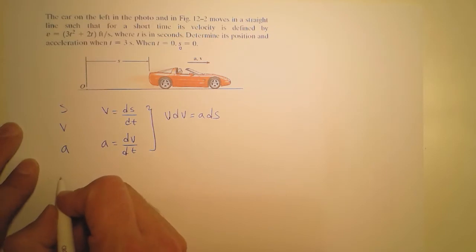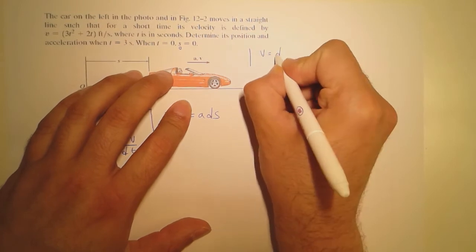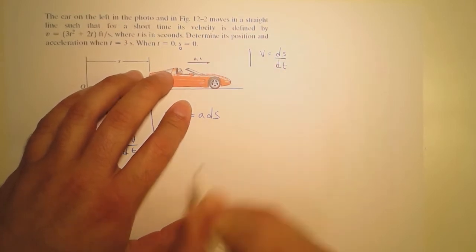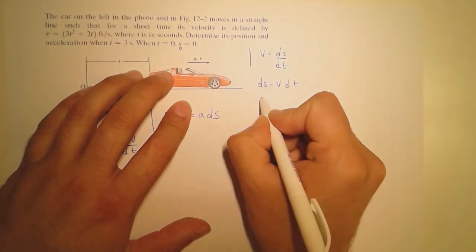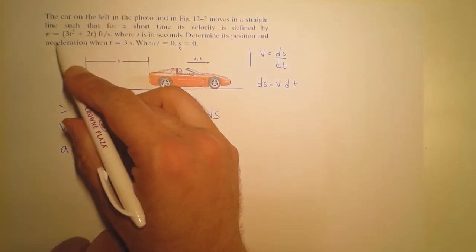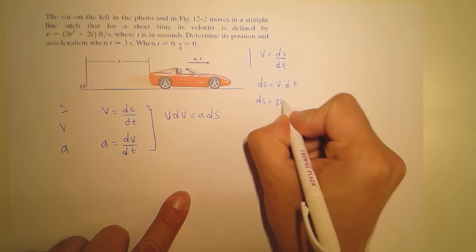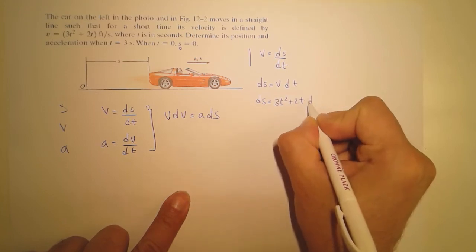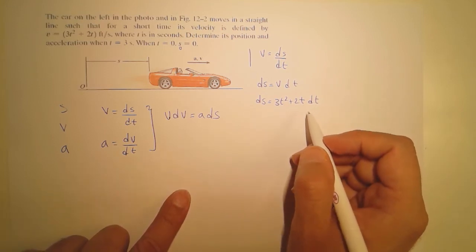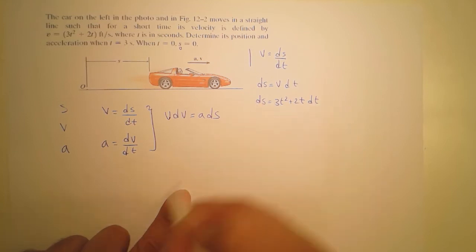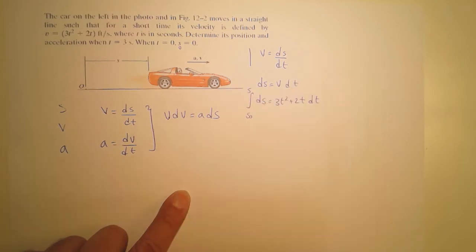To find the position, we use v equals ds over dt, rearranged as ds equals v dt. Substituting the velocity equation, we have v equals 3t² plus 2t. This is the relationship we need to integrate in order to obtain the equation for position.